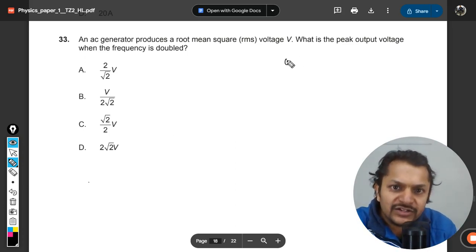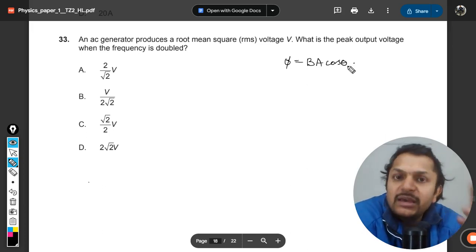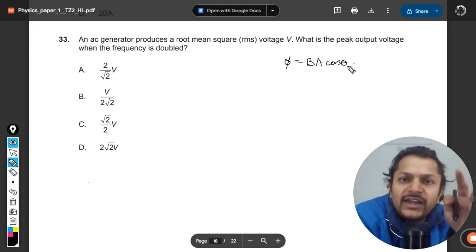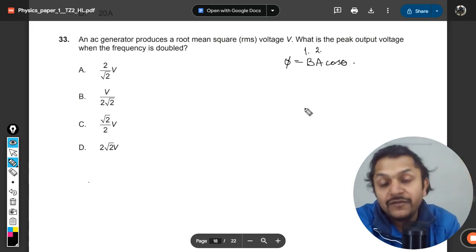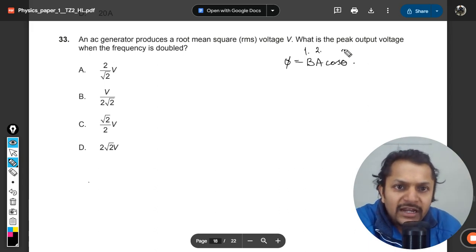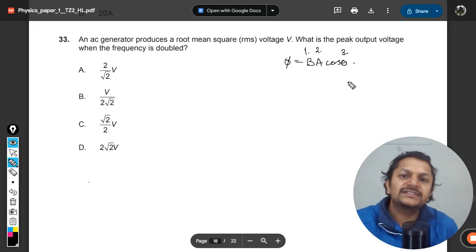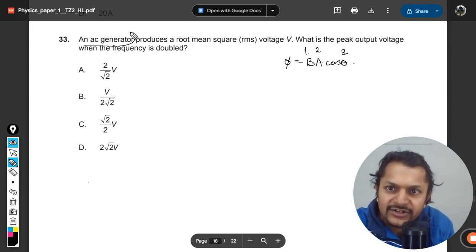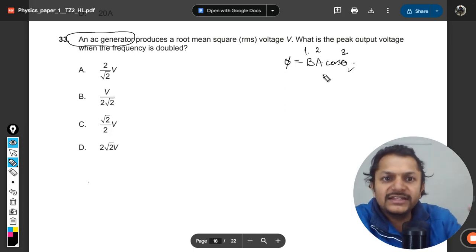The flux is given by B A cos θ, and whenever there is a change in the flux, EMF is generated. So there are three ways in which flux can be changed. Number one, you can change the magnetic field. Number two, you can change the area which becomes motional EMF. And number three, when you change the orientation of the coil, which is exactly the case with AC generators.